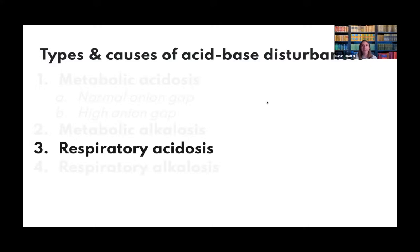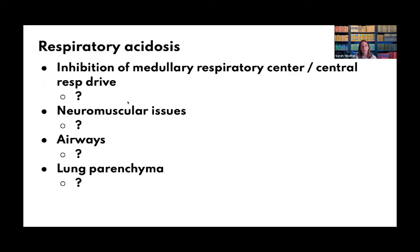Respiratory acidosis — think hypoventilation. The first category is inhibition of the medulla or respiratory center: opioids, intracranial tumors, and strokes all cause central respiratory depression. The second is neuromuscular: Guillain-Barré syndrome, Myasthenia Gravis, ALS, transverse myelitis, multiple sclerosis, and diaphragm or peripheral nerve paralysis all impair the muscles and nerves needed to breathe, leading to CO2 retention and respiratory acidosis.